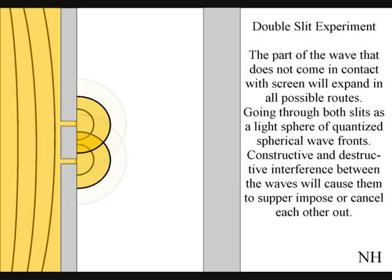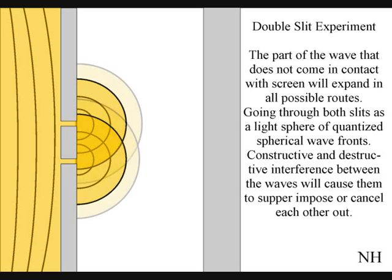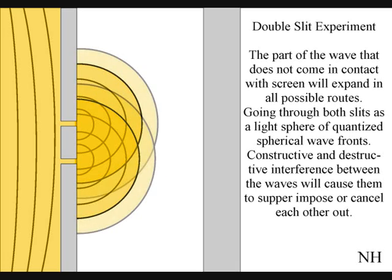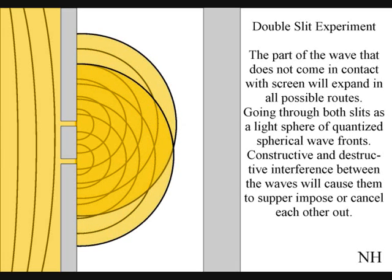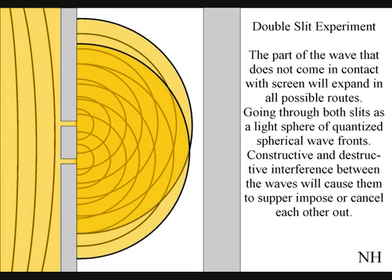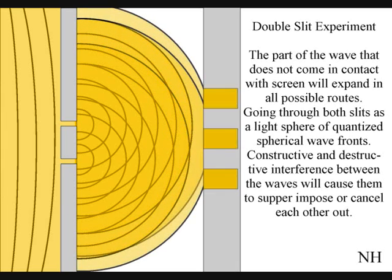Constructive and destructive interference between the waves will cause them to superimpose or cancel each other out. When this wave particle function comes in contact with the screen, it will collapse, creating moments of time and quantum particles in the shape of an interference pattern.